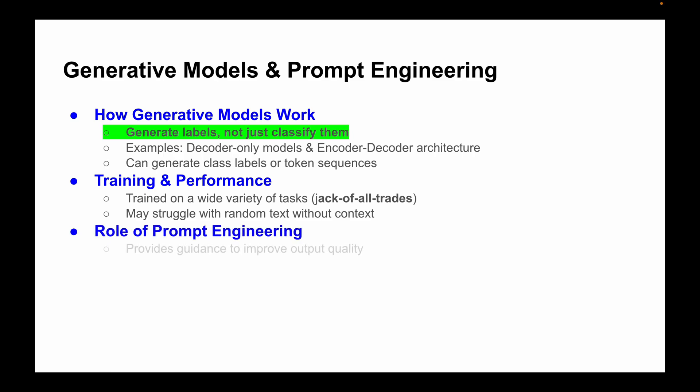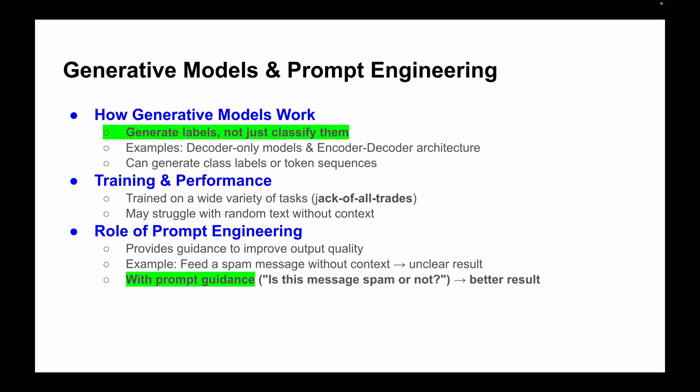This is where prompt engineering comes into play. Imagine feeding the model a spam message without context - it might have no clue what to do. But if we guide the model with the right context and instructions, like 'is this message spam or not?', we get much better results. Iteratively improving the prompt or instruction to get the preferred or expected output is called prompt engineering.